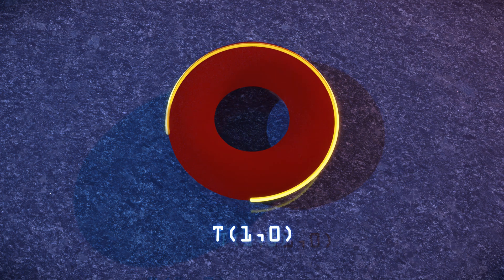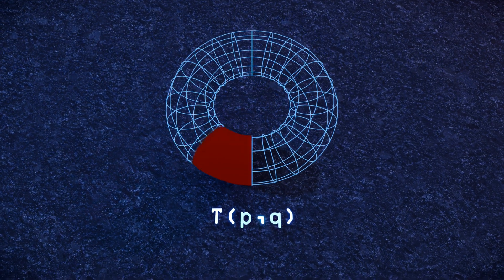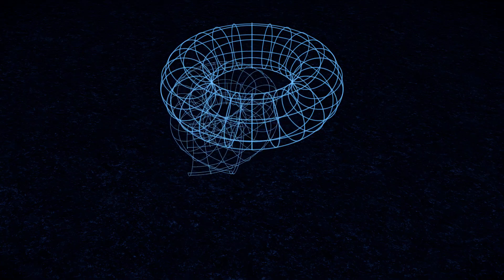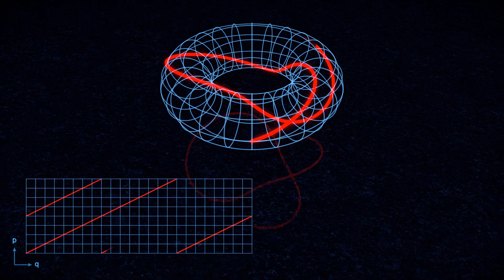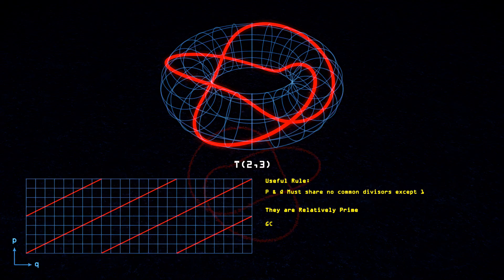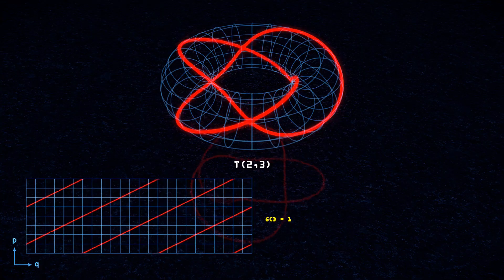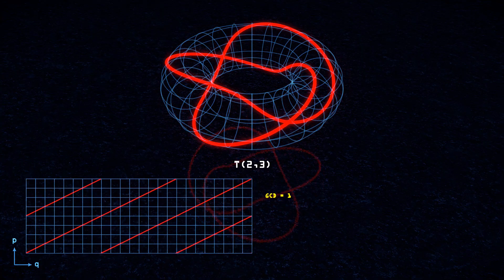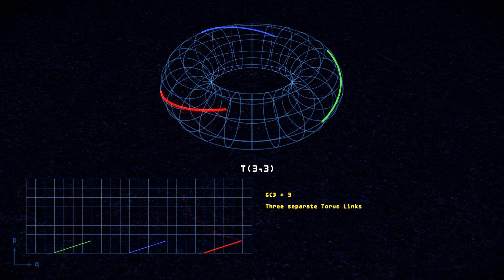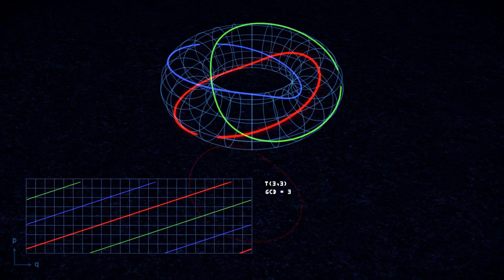But if either number is zero, the string only goes through or only around the torus, leaving us with a simple loop. An easy way to classify one of these knots is to unwrap the torus onto a square grid. On the vertical y-axis we count our p-steps, and on the horizontal axis we count our q-steps. A useful rule is that p and q must share no common divisors except one, which means that they are relatively prime. If the greatest common divisor — abbreviated to gcd — is equal to 1, the string closes into one continuous knot. If the gcd is greater than 1, the knot consists of multiple separate loops which are called torus links. A clear example of this is 3-3, which produces 3 separate links instead of a single knot.